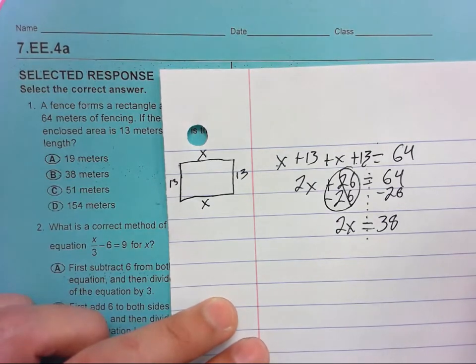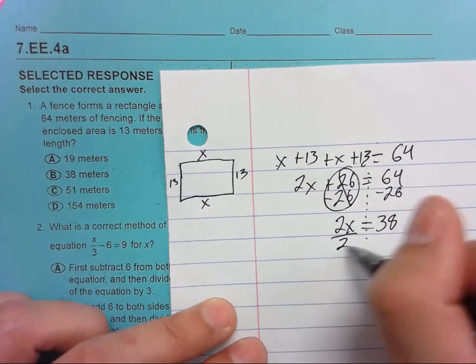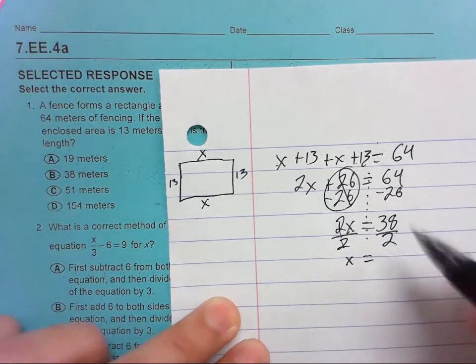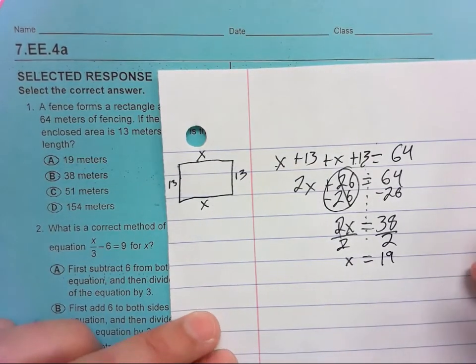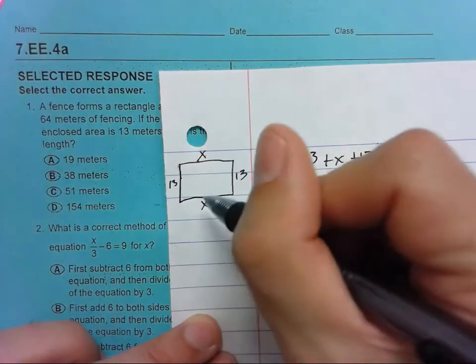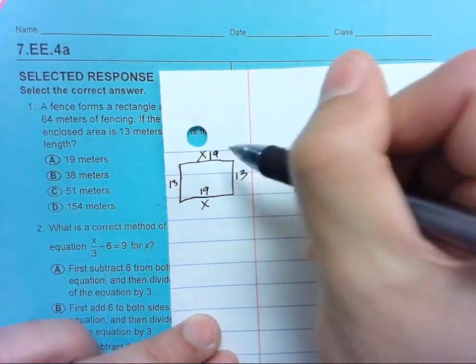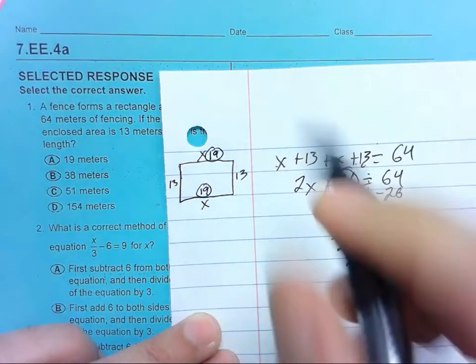And now to get X by itself, we divide by 2. And X equals 19. So this is 19. So this is 19, and the top is also 19. So number 1 is A. Moving on to 2.